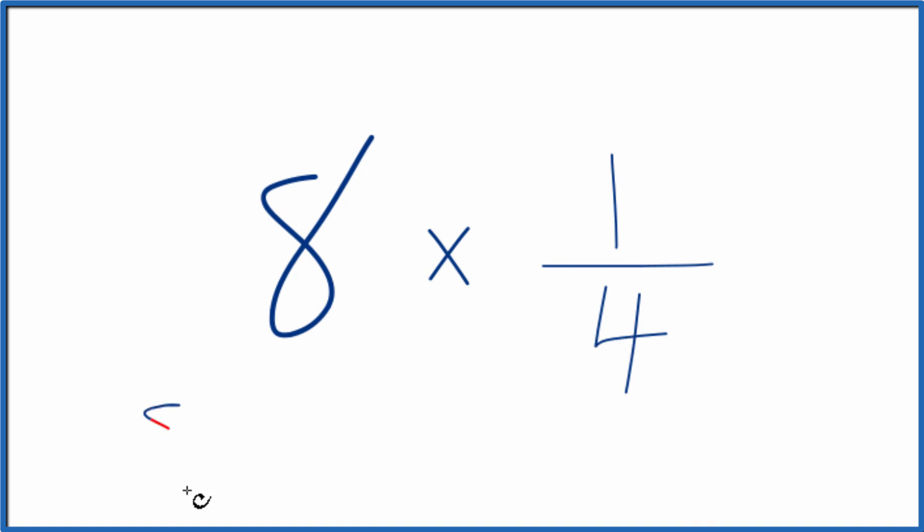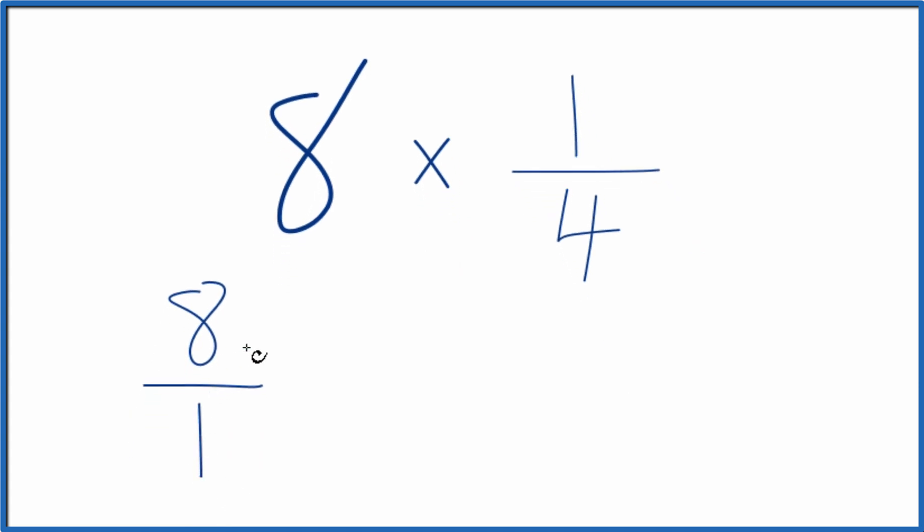Maybe a little bit easier would be to think of eight as eight over one. It's still eight. We're just dividing by one, but now we have this fraction and we can multiply that times 1 fourth.